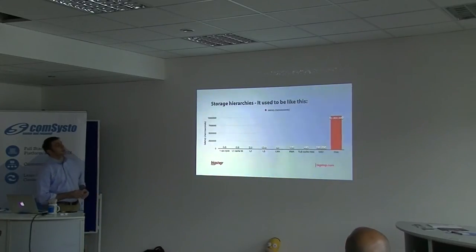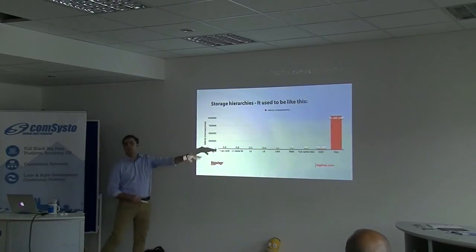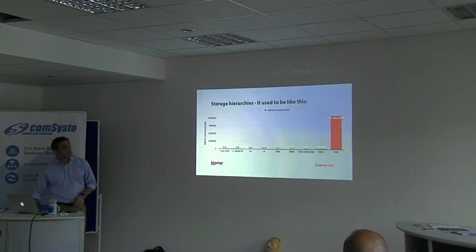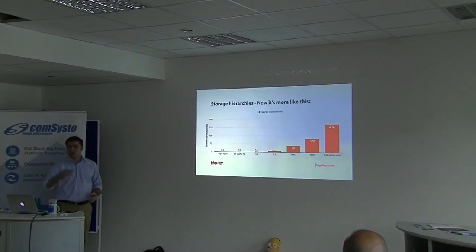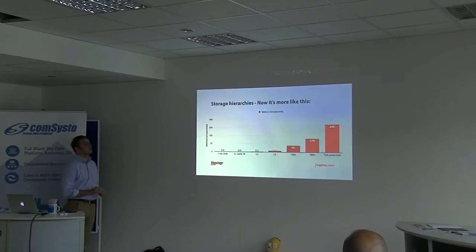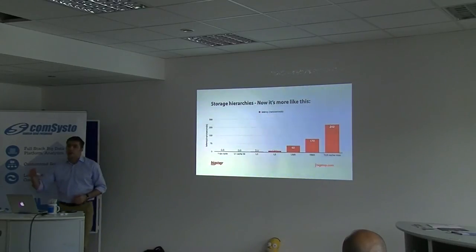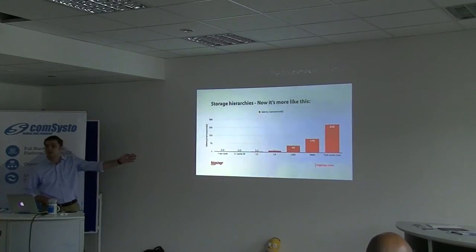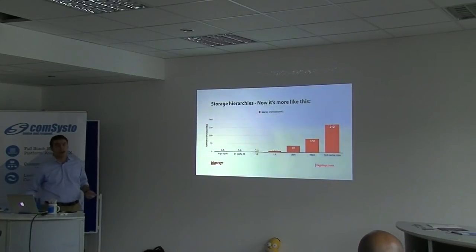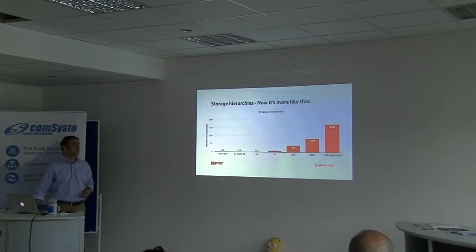Now, if you take disks and SSDs out of the equation, you start to see the real differences. It makes sense to optimize your application to use local memory versus remote memory, because that's a two-fold increase in performance. And minimizing your TLB cache misses brings a lot of performance increases — especially for applications that do a lot of memory access.